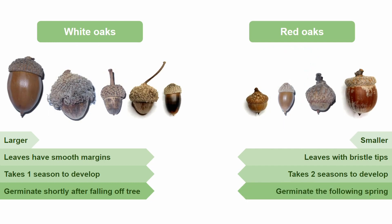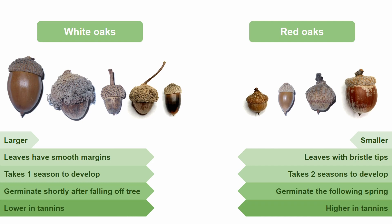Acorns in general are extremely valuable food sources for wildlife. However, the acorns of white oaks are generally preferred by animals because they are less bitter, due to containing less of the chemical compounds called tannins. These compounds not only make the acorns bitter but also make them more difficult to digest. Red oaks may be higher in tannins, but they're also higher in protein, fiber, fat, and calories — though that might not make up for the fact that they're harder to digest.